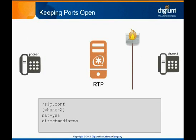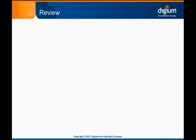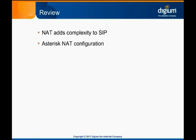Anytime Asterisk or any endpoints are behind a firewall, it's a good idea to enable qualify equals yes, which will send frequent SIP options messages to the endpoint to confirm the status of the device and determine if it is available. This has the added benefit of keeping a port open on the firewall. NAT is a great networking tool, but introduces significant complexity in SIP calling. We encourage you to read the section called NAT Support in Asterisk's sample-sip.conf file to learn more about the various options available.